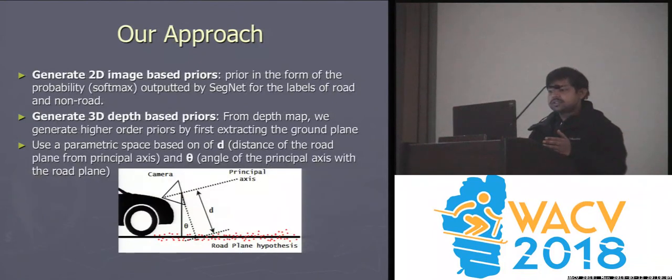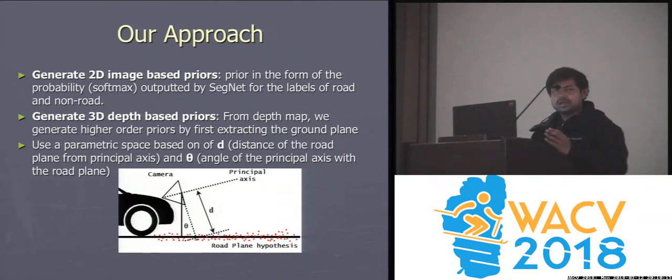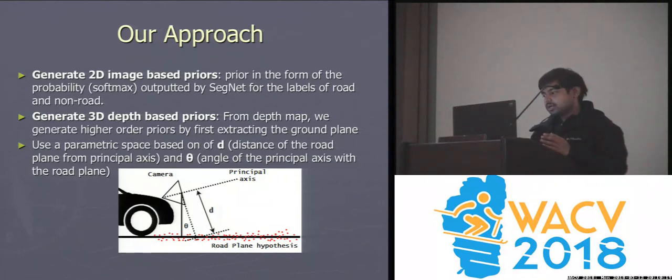Describing our approach: first, we generate 2D priors in the form of a probability distribution from a CNN-based method such as SegNet, and use it for generating the priors for our method.